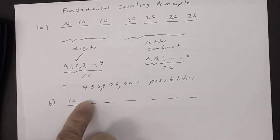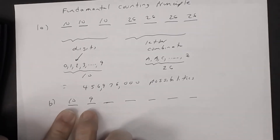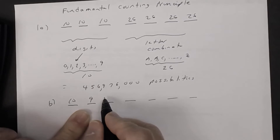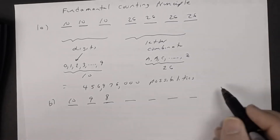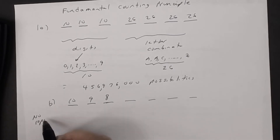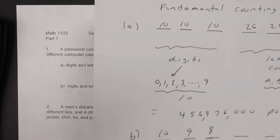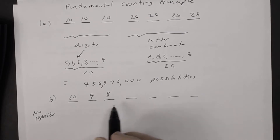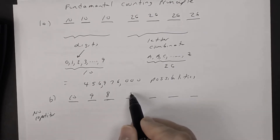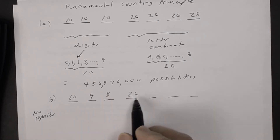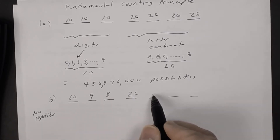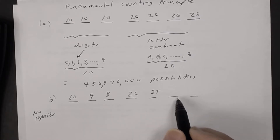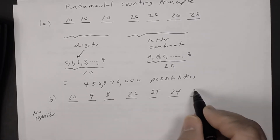With no repetition, the digit choices become 10, 9, 8. For the letters: the first letter has 26 possibilities. If B is chosen, I can't use B again — so 25 are left. Then if B and F are used, there are 24 left, then finally 23.